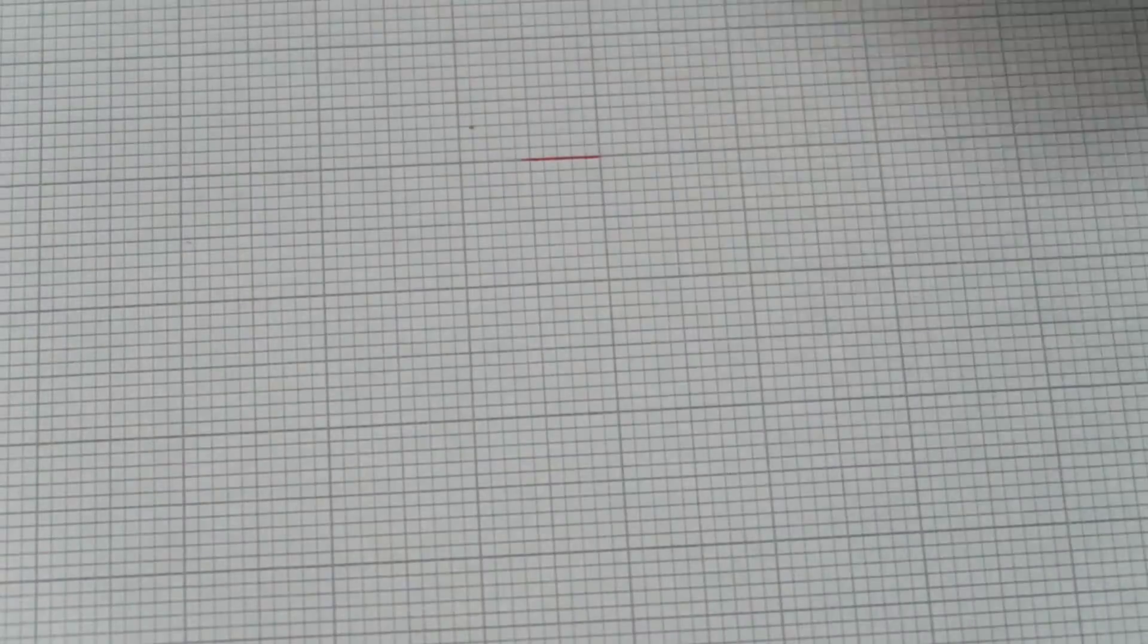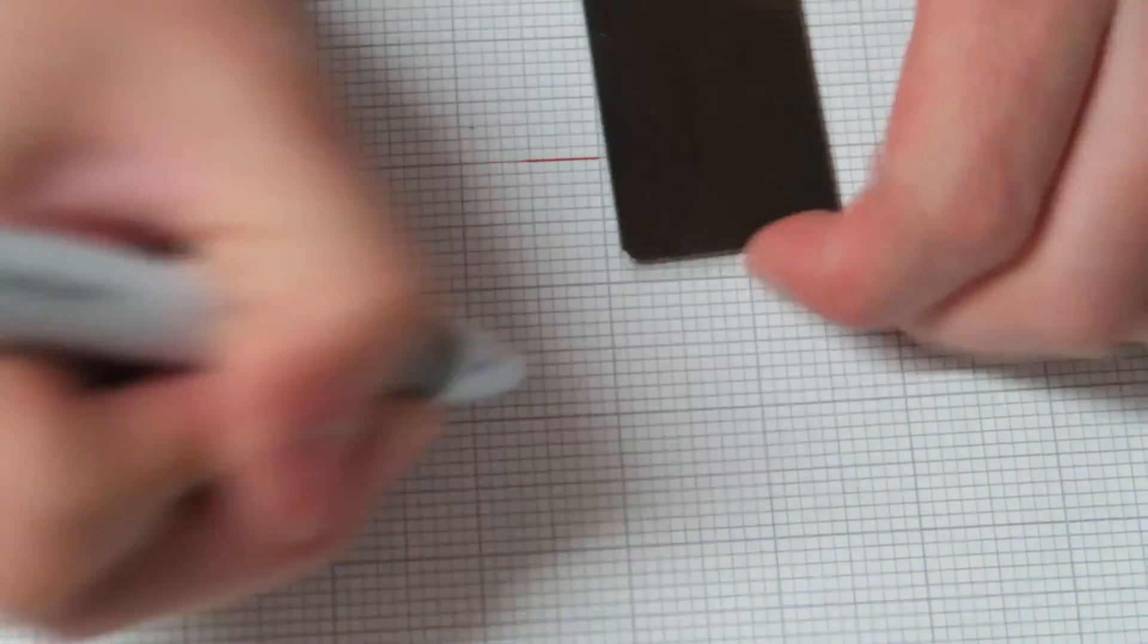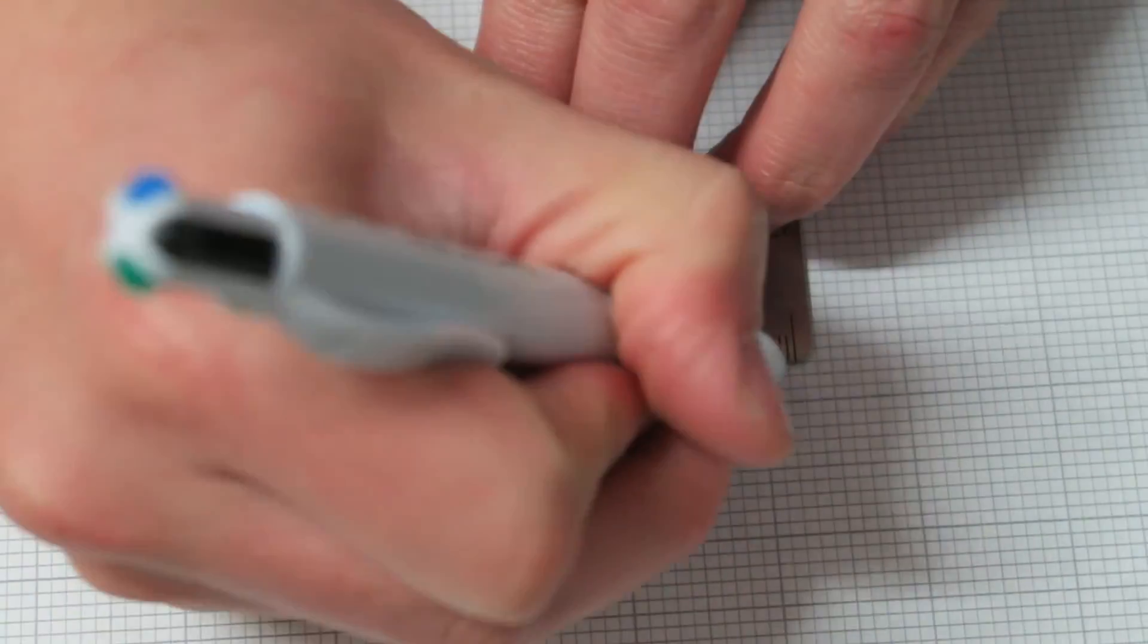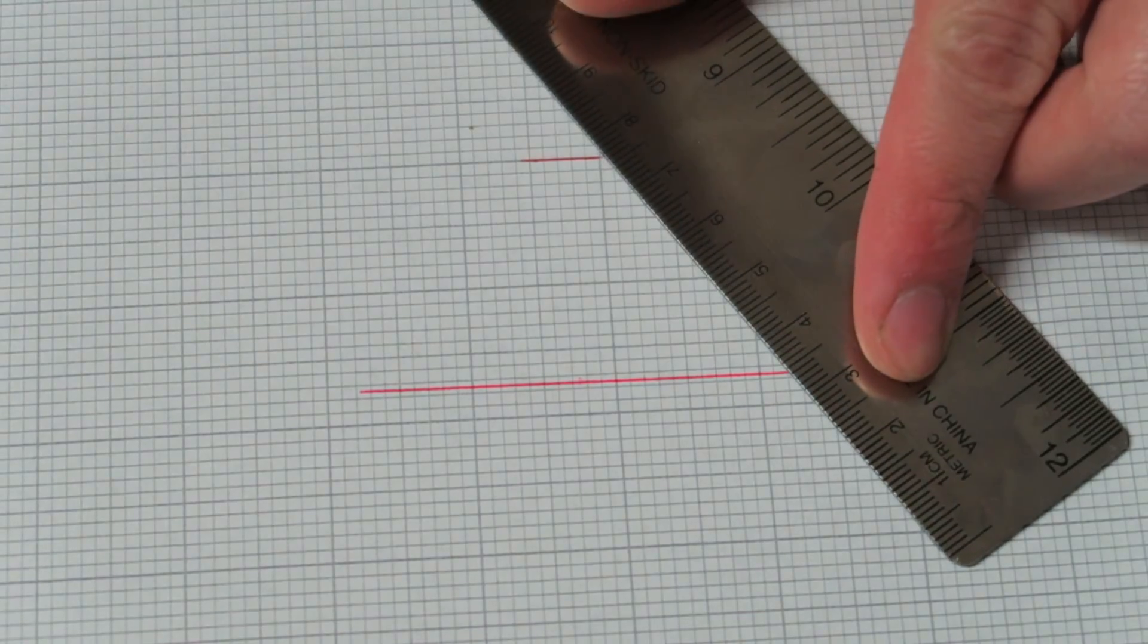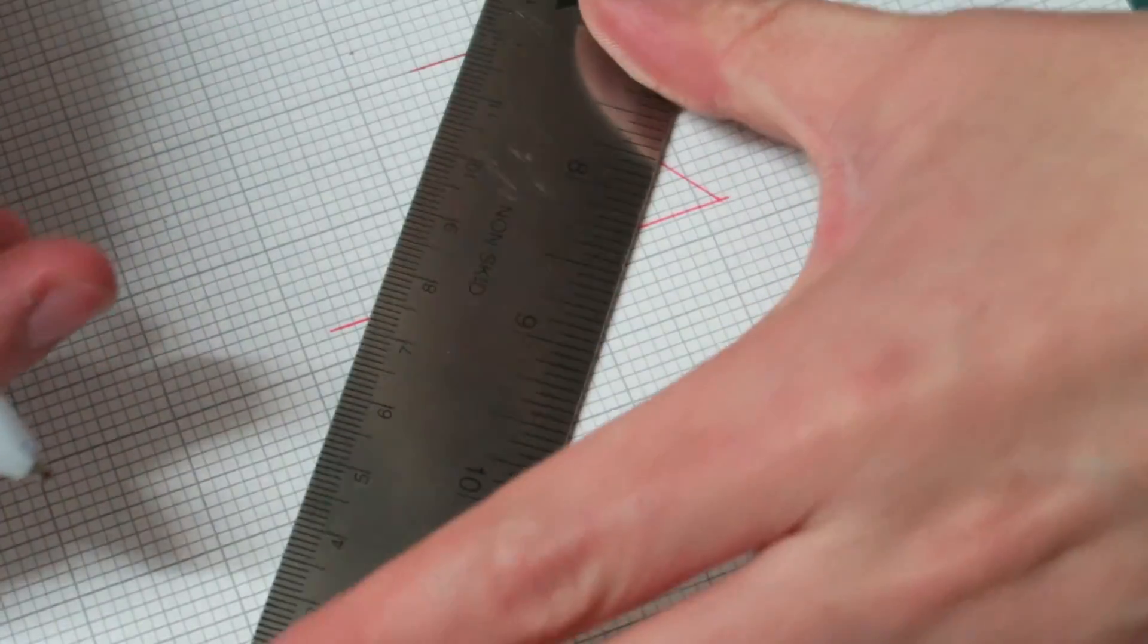So you're going to start off by drawing a trapezium. It's going to be 1 cm on the top, 3.5 cm going down or the height of it, and 6 cm going across at the bottom.